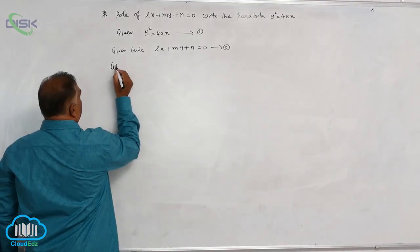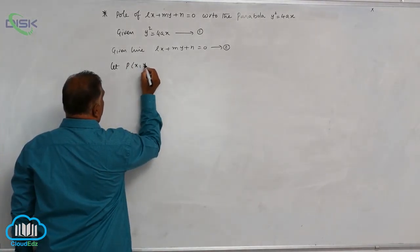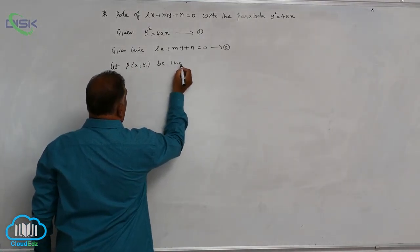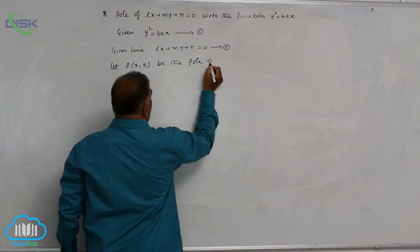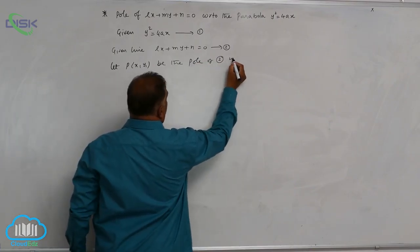Let P(x1, y1) be the pole of equation 2 with respect to equation 1.